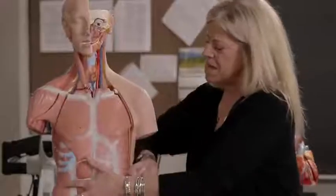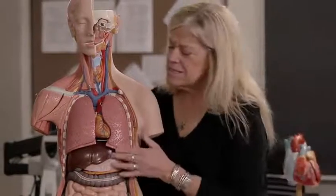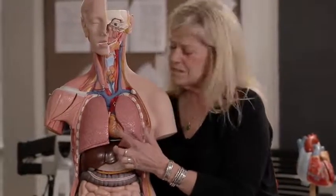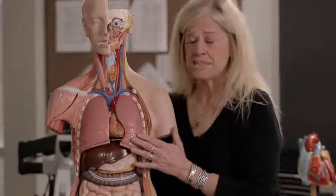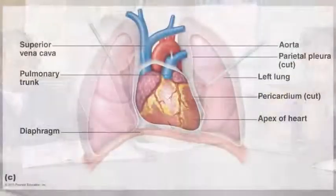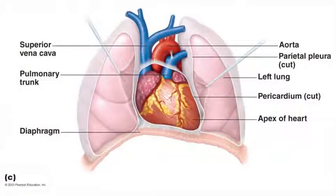I'll point out the sternum for orientation purposes, then remove the front wall of this model. We can see the heart peeking out from between the two lungs, which is its normal position in the thoracic cavity. In the textbook image, you can see the heart is enclosed by a membrane layer called the pericardium.